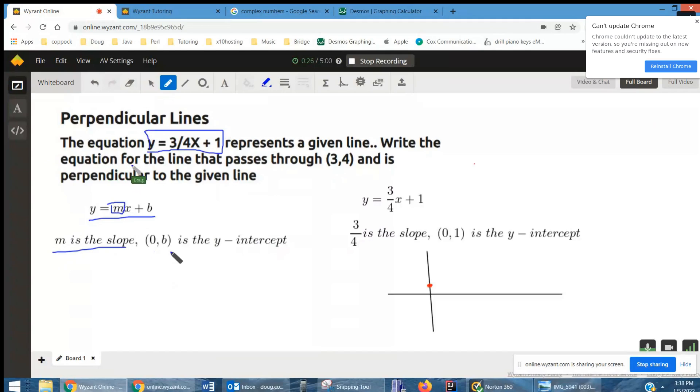And the point 0, b is the y-intercept of the line. So for your equation, the slope is three-fourths, and you think of slope as rise over run. We're going to talk about that in a second. And the y-intercept is at 0, 1.